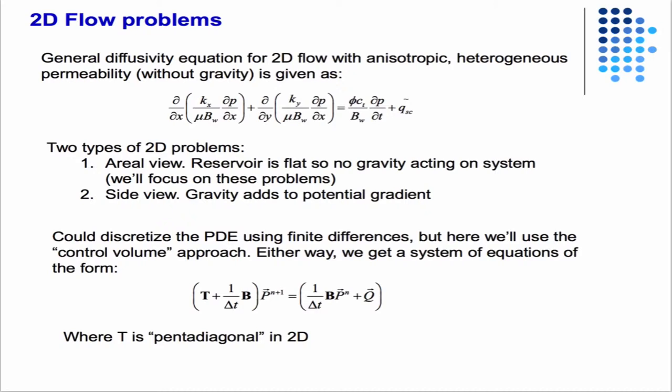It is possible to do 2D calculations from a side view where you would include the effects of gravity. If we were to use finite differences to discretize that PDE, or the way we did it with the control volume approach, we end up with the same set of equations we had in 1D with the main difference being the T matrix has a different structure.